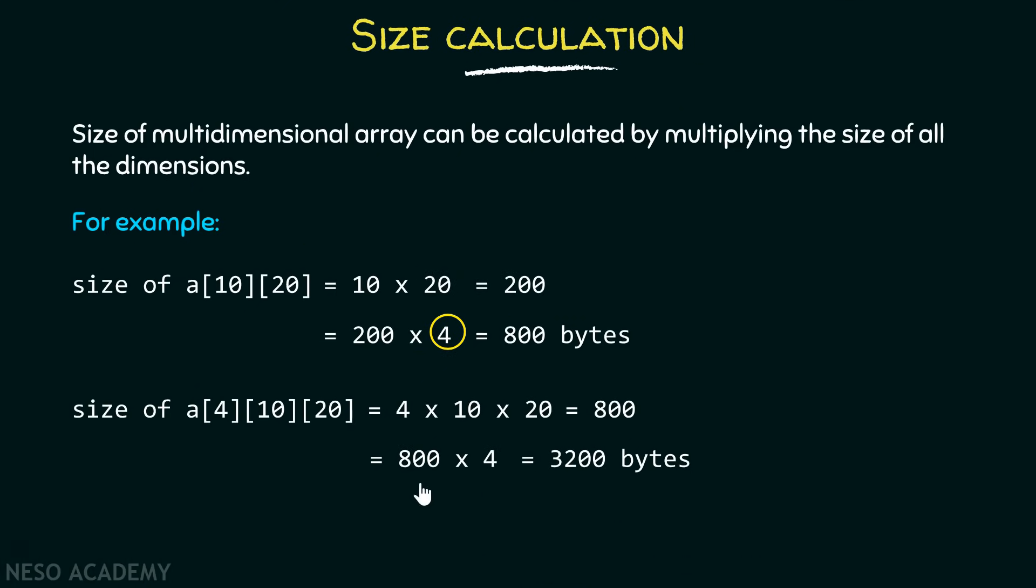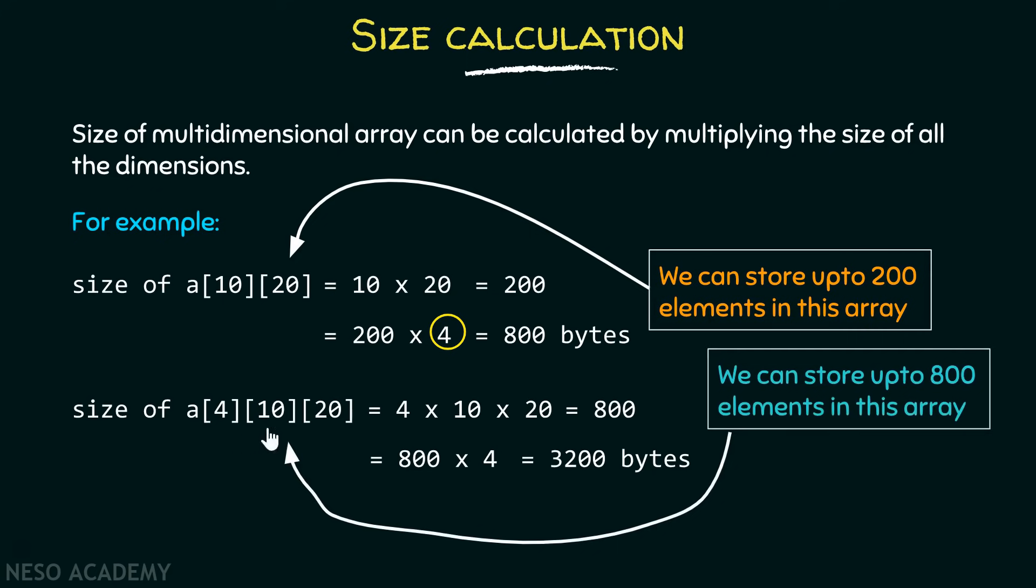Here I am multiplying 800 by 4 because I am assuming that the size of one integer in my machine is 4 bytes. It can be anything, depends from machine to machine. Please note that we can store up to 200 elements in this array and we can store up to 800 elements in this array.